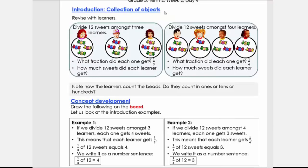So we're going to look at the introduction now. The introduction, we're going to look at what we've done in grade four. So it's just a revision part. We're going to say divide 12 sweets amongst three learners. We show them these pictures. We got those three learners, we got the 12 sweets, and it's then divided between them. Then we're going to ask what fraction did each of them get? Each of them got a third of the sweets. And then how much sweets did each learner get? Each got four.